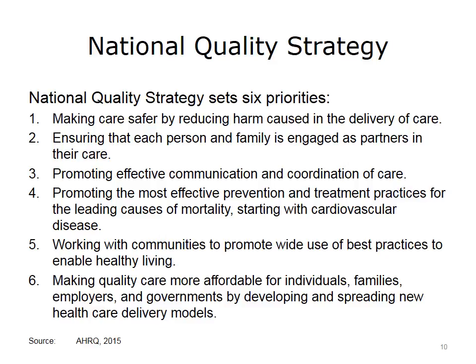One, making care safer by reducing harm caused in the delivery of care. Two, ensuring that each person and family is engaged as partners in their care. Three, promoting effective communication and coordination of care. Four, promoting the most effective prevention and treatment practices for the leading causes of mortality, starting with cardiovascular disease. Five, working with communities to promote wide use of best practices to enable healthy living. Six, making quality care more affordable for individuals, families, employers, and governments by developing and spreading new health care delivery models. The priority areas are also sometimes called NQS domains, and CMS's value-based payment models explicitly align quality measurement to those domains.